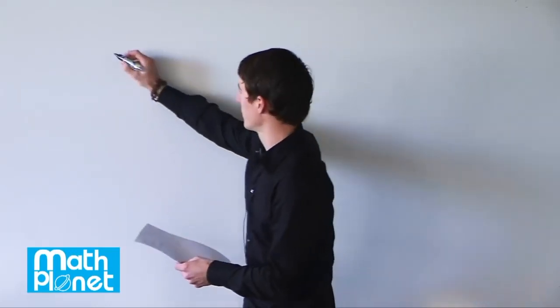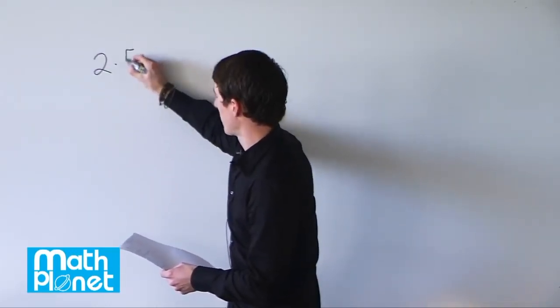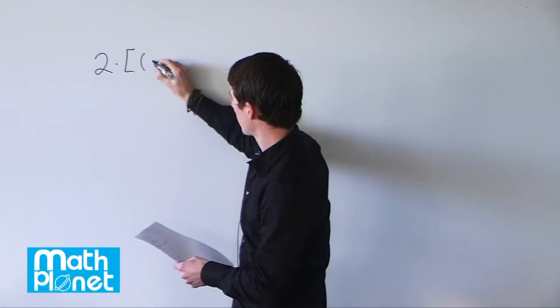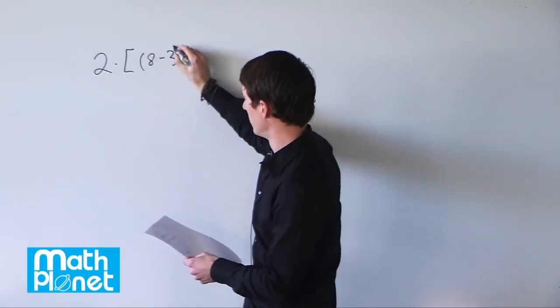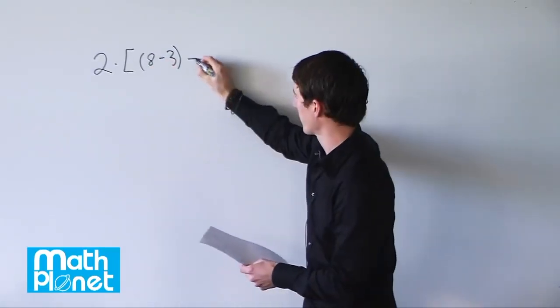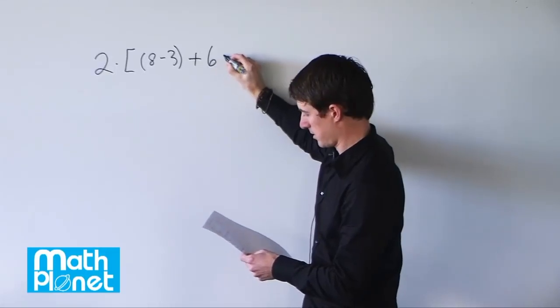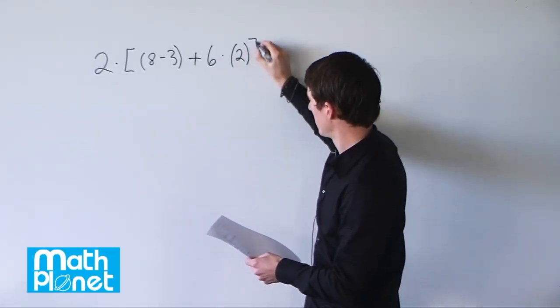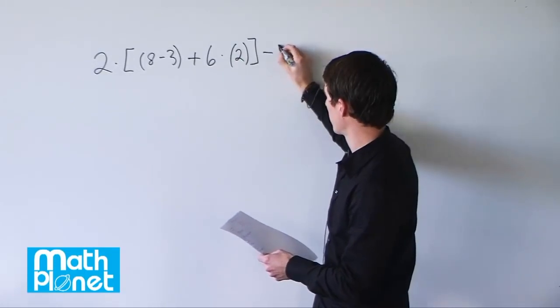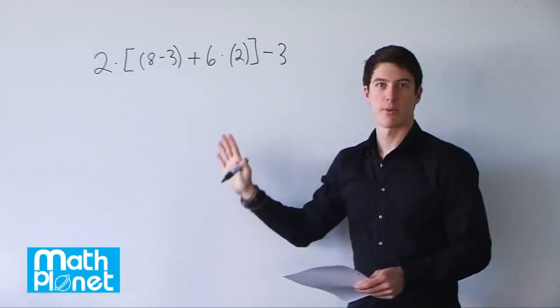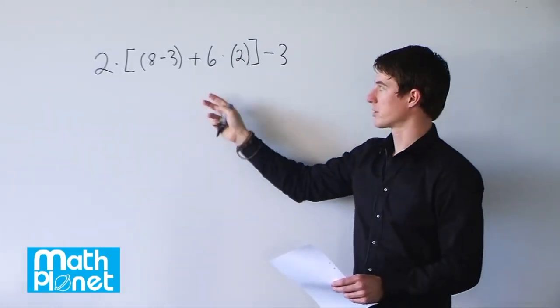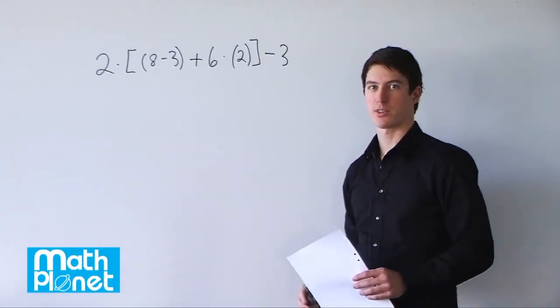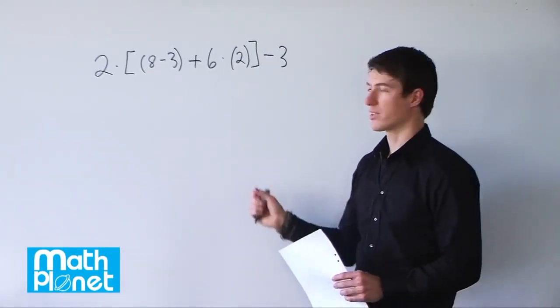Here we have an arithmetic expression and we want to simplify to solve as best as we can. The expression is 2 times bracket quantity 8 minus 3 plus 6 times bracket 2 close bracket minus 3. So it's just a bit of a messy arithmetic expression. We're going to simplify it down as much as possible using the order of operations and see what it equals.